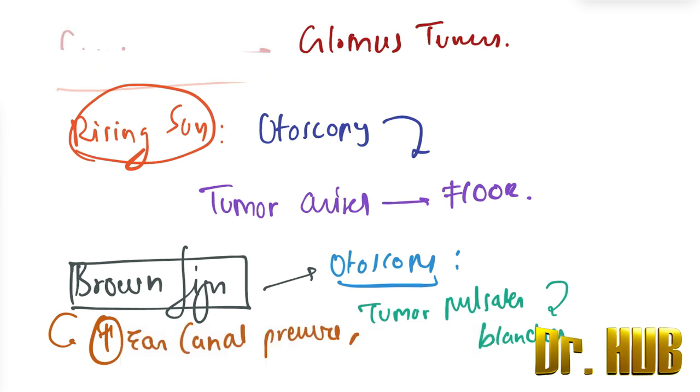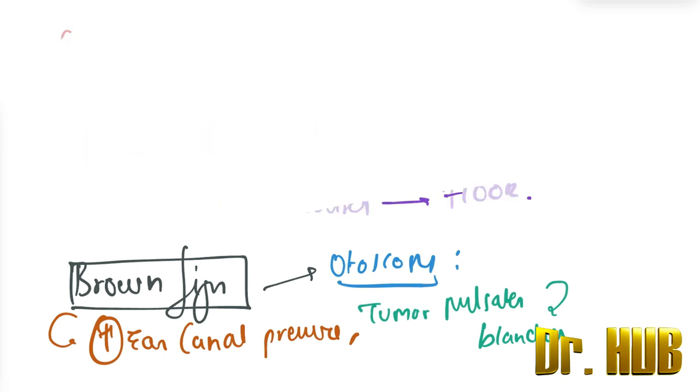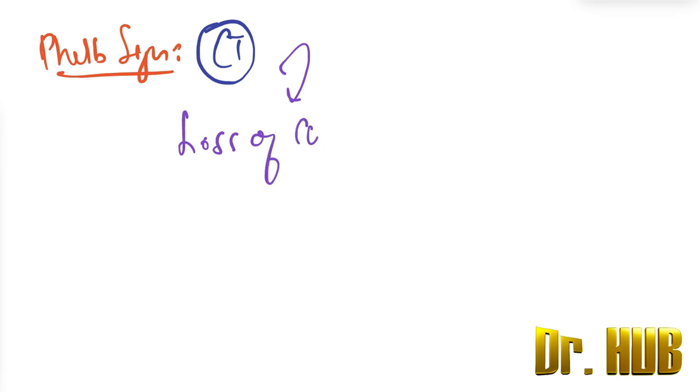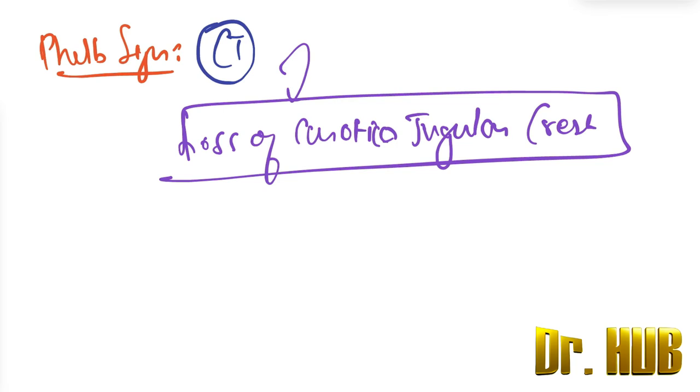Next we'll be looking at the Flare sign. So in terms of the Flare sign, it is seen in case of CT, and what is seen is a loss of the carotico jugular crest.